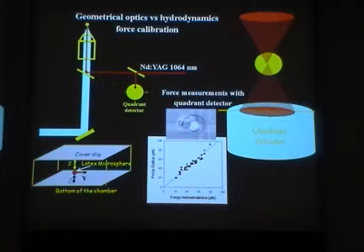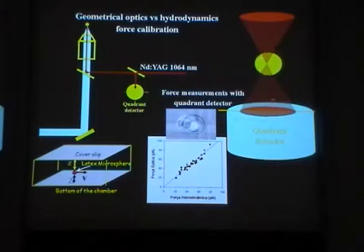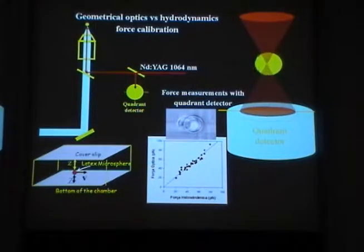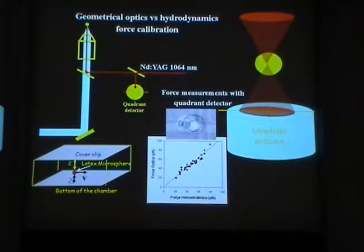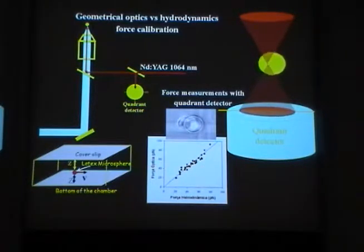The way that we did that is using the optical tweezers and the quadrant detector. As soon as these microorganisms tend to move and they exert a force, with the quadrant detector you can calibrate this and determine the direction of the force — not only the strength of the force, but the direction of the force as well.